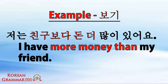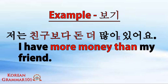The next example is for the counter: jeonun chinggu buddha don do mani isoyo. 'Jeonun' is I, and we are comparing to our friend — 'chinggu' takes 보다. 'Don' means money, 'do' means more, 'mani' means many, and 'isoyo' means have. So the sentence means: I have more money than my friend.